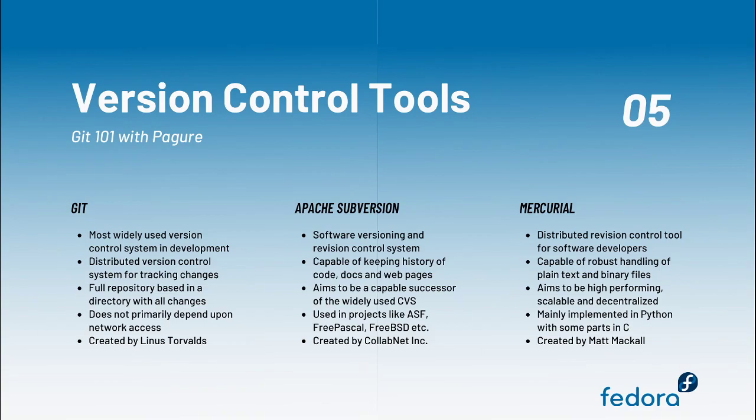And finally, we have Mercurial. It is a distributed revision control system just like Git, capable of robust handling of both plain text and binary files. It was written by Matt McCall, mostly in Python with some parts in C, to be high performing, scalable, and decentralized.